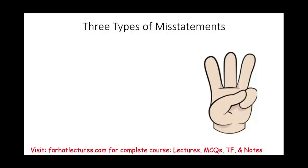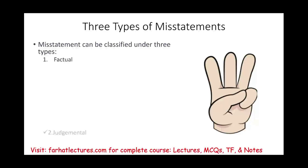The first thing we need to be familiar with is the concept of types of misstatements. We're going to have three types: one is factual, two is judgmental, three is projected. We need to know about these three because if you understand what type of misstatements you are dealing with, it's easier to understand how management and the auditor will agree or disagree on that misstatement.